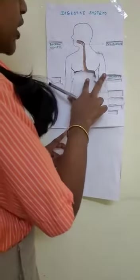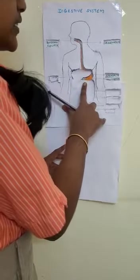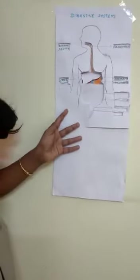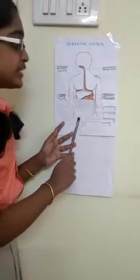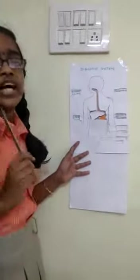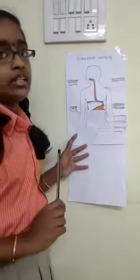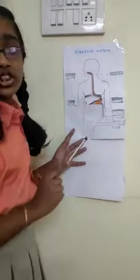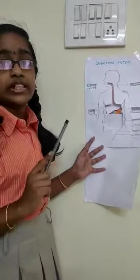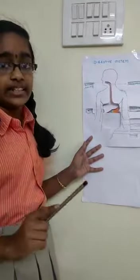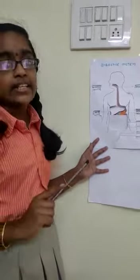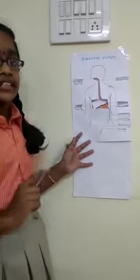The next part of the alimentary canal is the stomach. The stomach is a J-shaped organ and it is the widest part of the alimentary canal. In the inner lining of the stomach, there are some juices which are secreted — that is the mucus, hydrochloric acid, and the digestive juices.